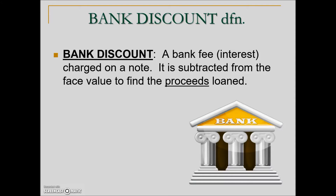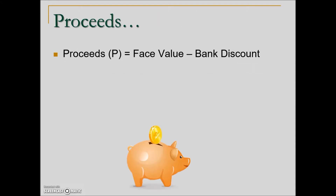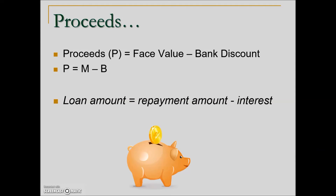This is just a different type of loan arrangement. Proceeds, symbolized with the letter P — not to be confused with the P used for principal in simple interest — are found by taking the face value minus the bank discount. In other words, proceeds are the loan amount, found by taking the repayment amount or maturity value minus the interest. So you can think of bank discount as interest.